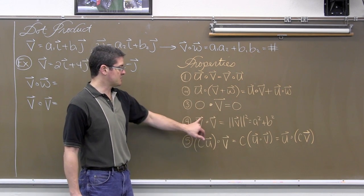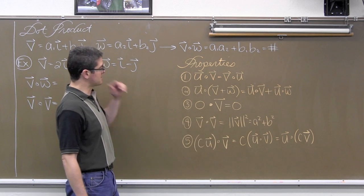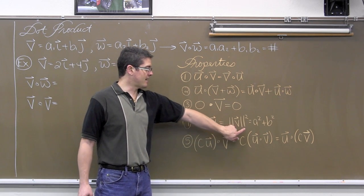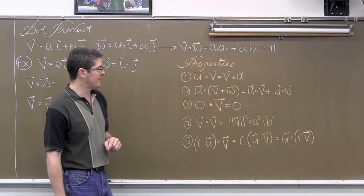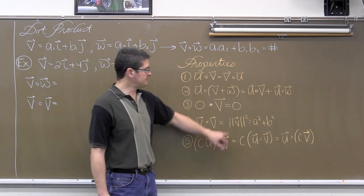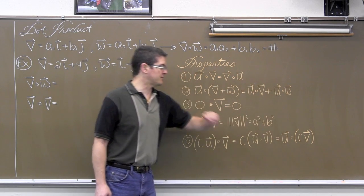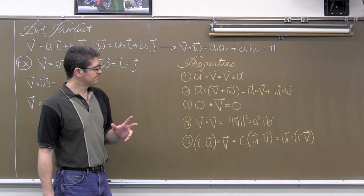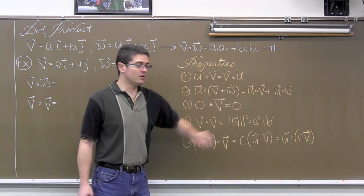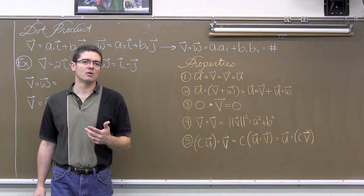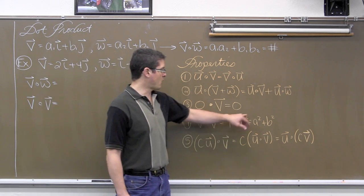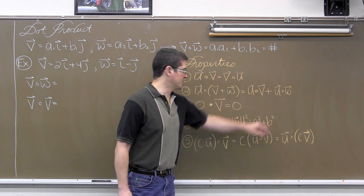And if you take the dot product between any vector and itself, as you will see in this example, that is the same as squaring the magnitude of that same vector. And you do actually have to write that out. The square root that you would see in the magnitude, which is the distance formula, the Pythagorean theorem, will cancel away with the power of two.